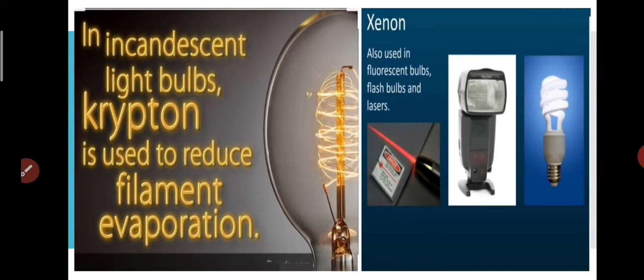Next, krypton, it is used in incandescent light bulbs. Now, what is this bulb? It is an electric bulb with a wire filament which is heated until it glows.